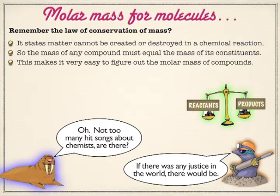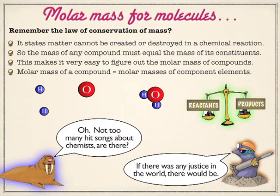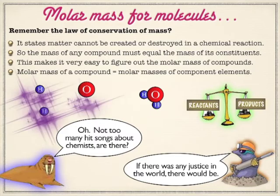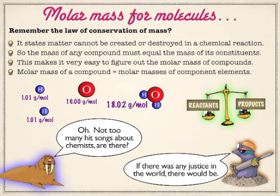All you have to do is know the molar mass of each of the constituents and how many of each constituent you have, and you can total this up. So don't make this more complex than it needs to be. For H₂O, we've got the molar mass of hydrogen twice and the molar mass of oxygen once. Because each of those are 1 or 16 grams per mole respectively, if we total that together, water would be about 18 grams per mole.